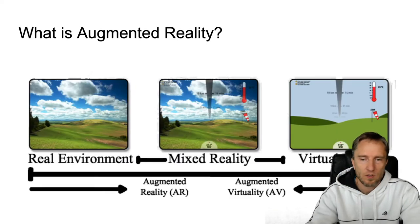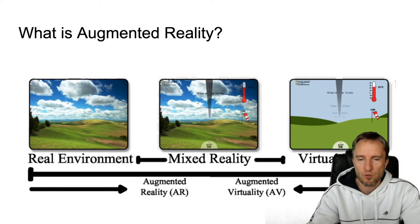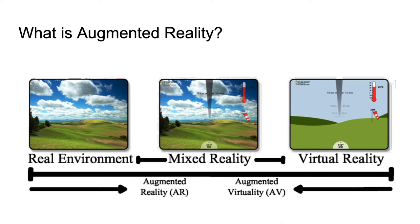We can also talk about augmented reality as a certain aspect of a continuum. On the left-hand side is the real environment with no augmentation whatsoever; on the right-hand side is virtual reality with no real content, everything computer generated. In the middle we have mixed reality, which combines the real world with the virtual world. Augmented reality sits on the left-hand edge of this mixed reality spectrum, whereas augmented virtuality sits on the right-hand edge.